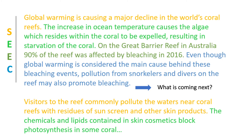Our next paragraph starts with the topic sentence: 'Visitors to the reef commonly pollute the waters near coral reefs with residues of sunscreen and other skin products.' Here we are replacing the words 'snorkelers and divers' with 'visitors,' using key words to connect across a concluding sentence to a new topic sentence. We even use a similar root word — 'pollute' from 'pollution' — to further connect these. We start out generally, then move into more specific examples about sunscreen residue. 'The chemicals and lipids contained in skin cosmetics block photosynthesis in some coral.' And the paragraph would continue.